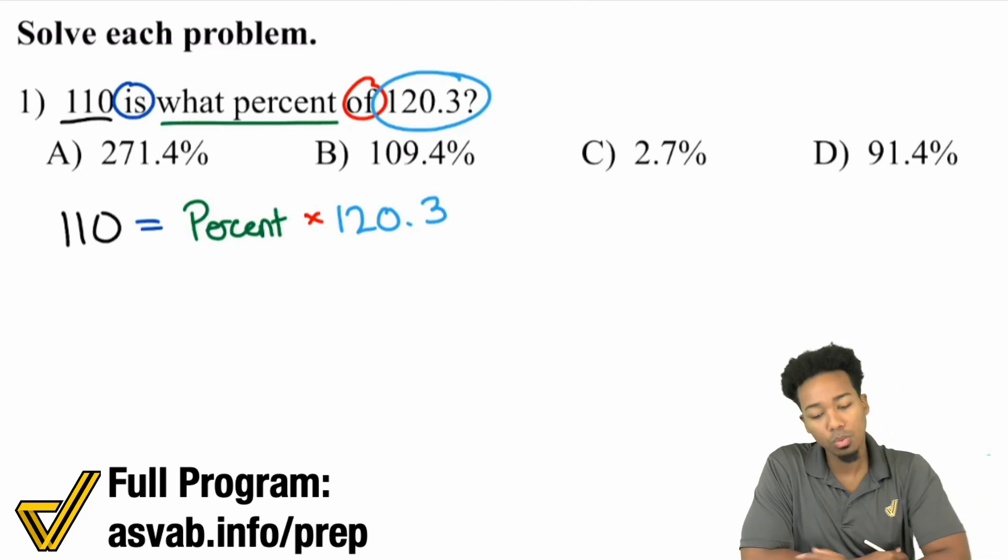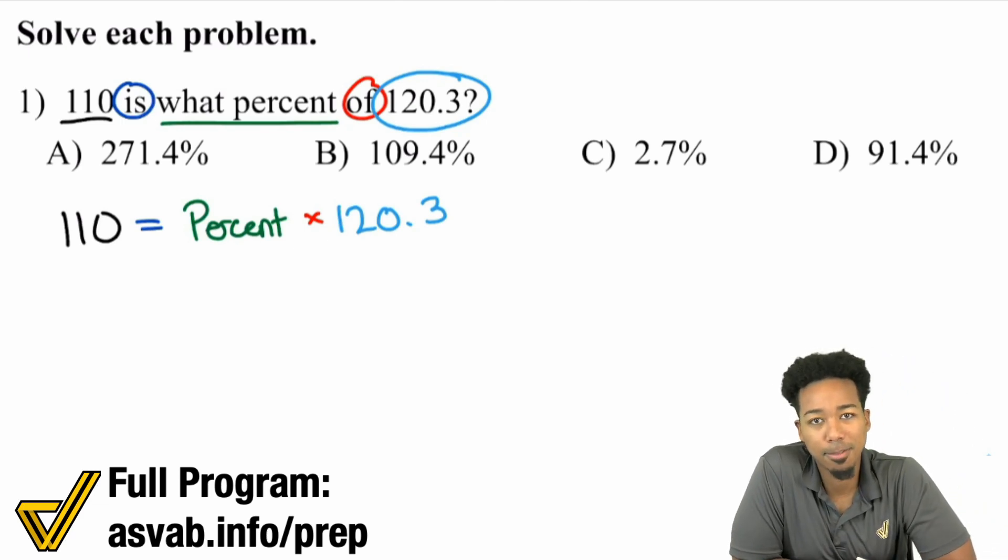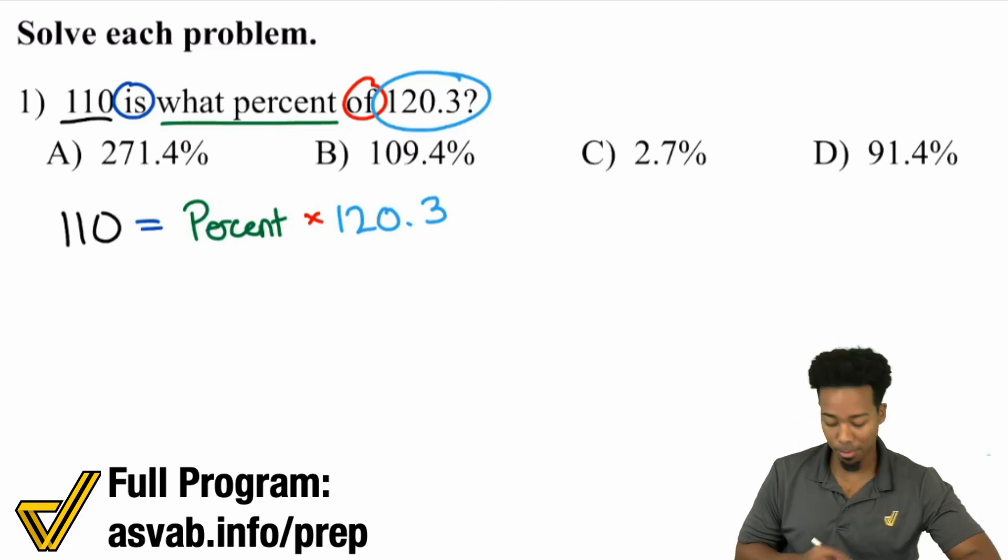What do you think you need to do here? Similar to the last video where we had to find the original number, notice we had to divide. Same thing here. You would divide that original number on both sides to figure out what's the percent going to be.